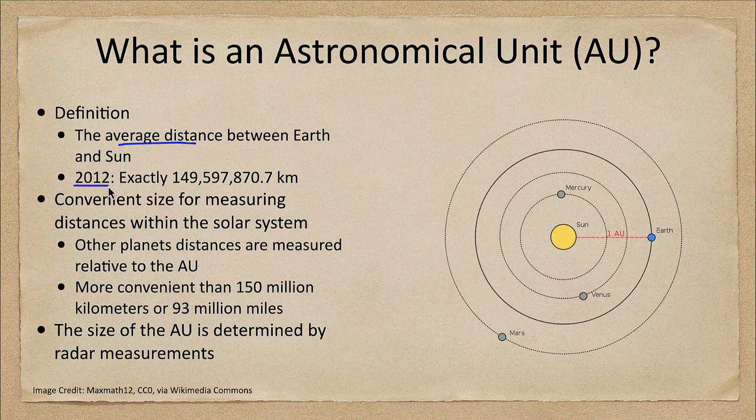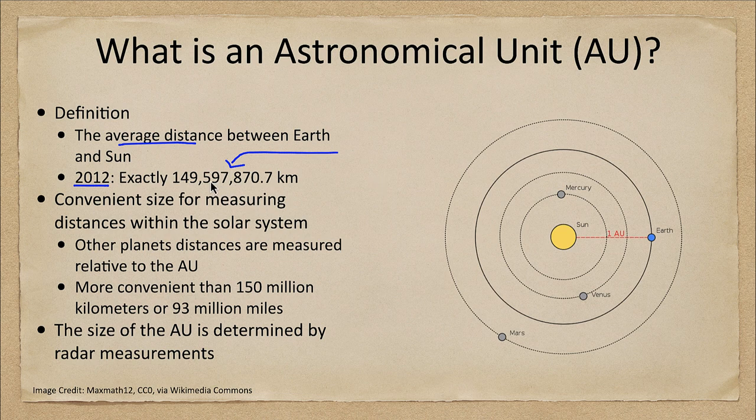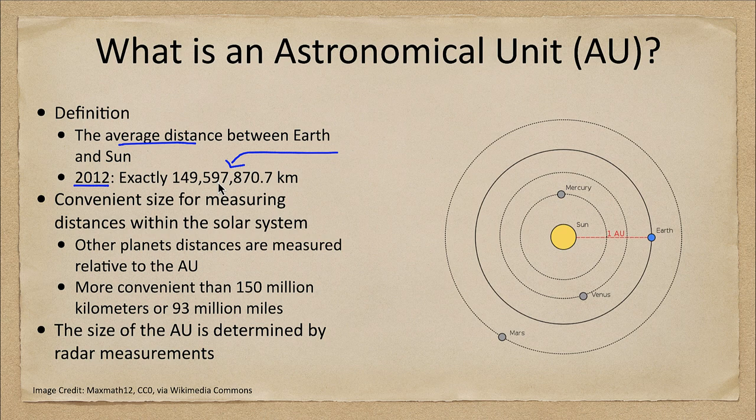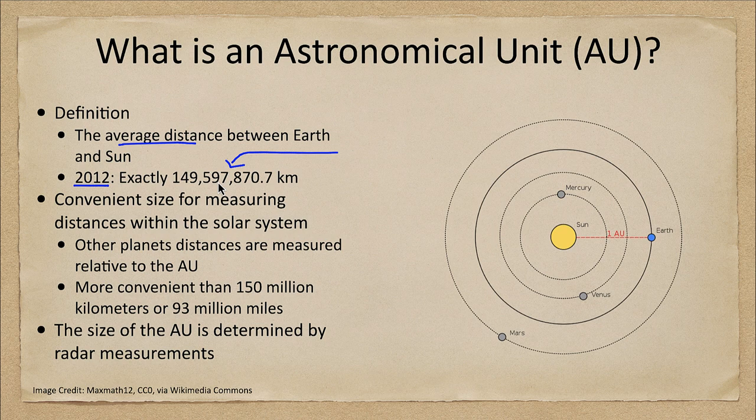And in 2012 we made an exact definition. So how long is an astronomical unit? Well it is now defined as 149,597,807.7 kilometers. So a very large distance as the distance between Earth and Sun is much larger than either the size of the sun or Earth themselves.